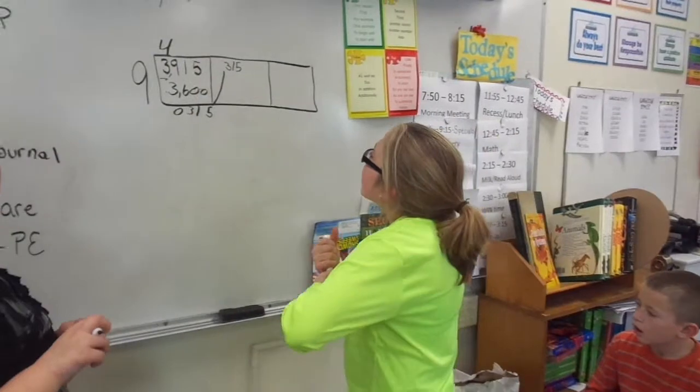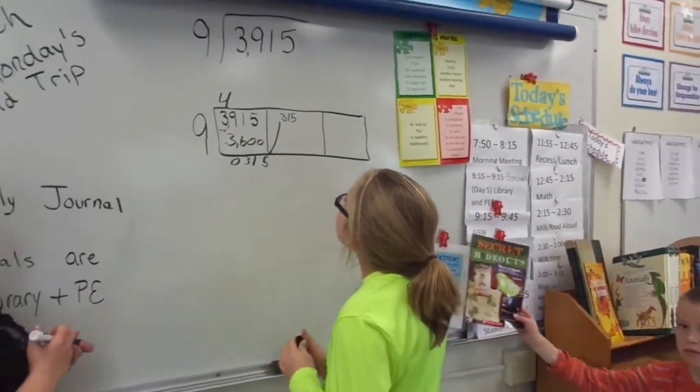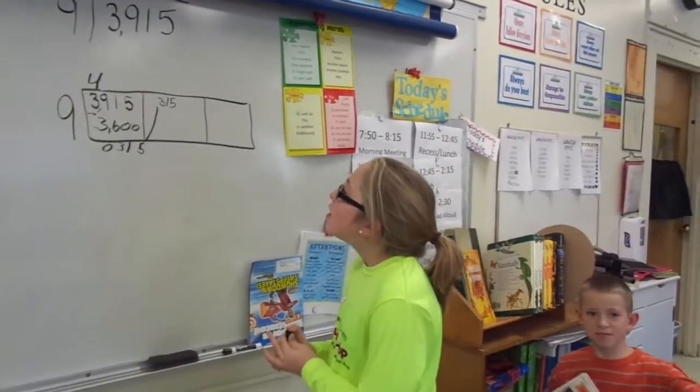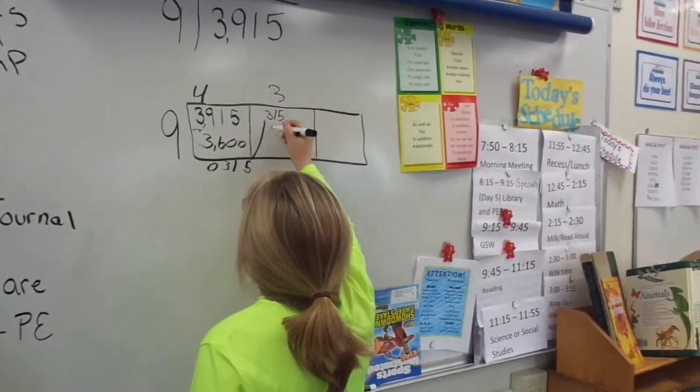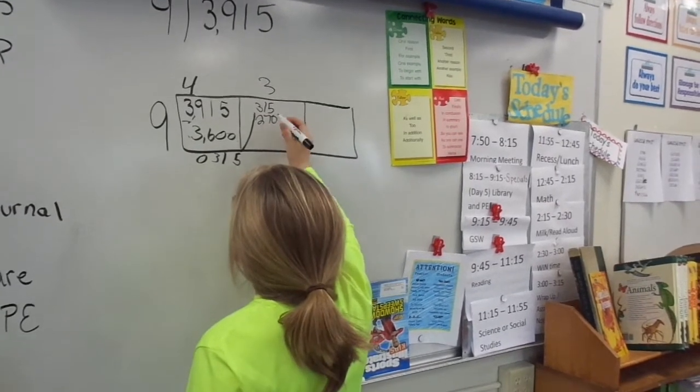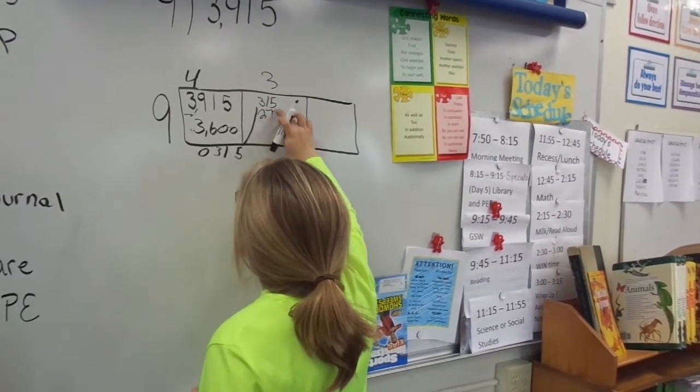So now what are we thinking, Ella? I've got to find out how many times does 9 go into 31. That goes in 3 times. And 3 times 9 is 27, but you wrote 270. Nice job.